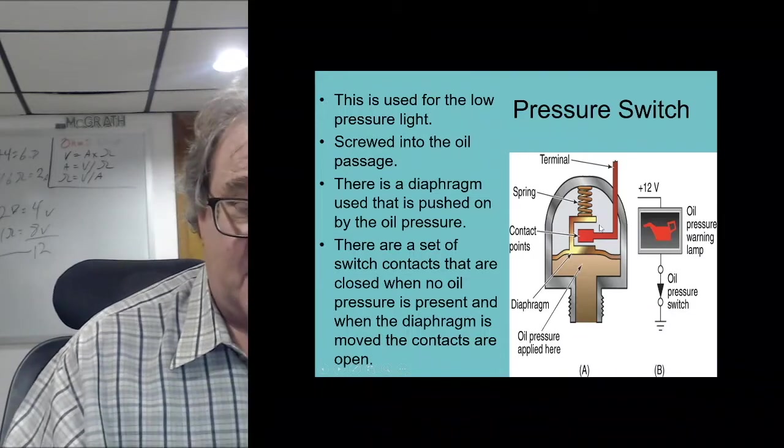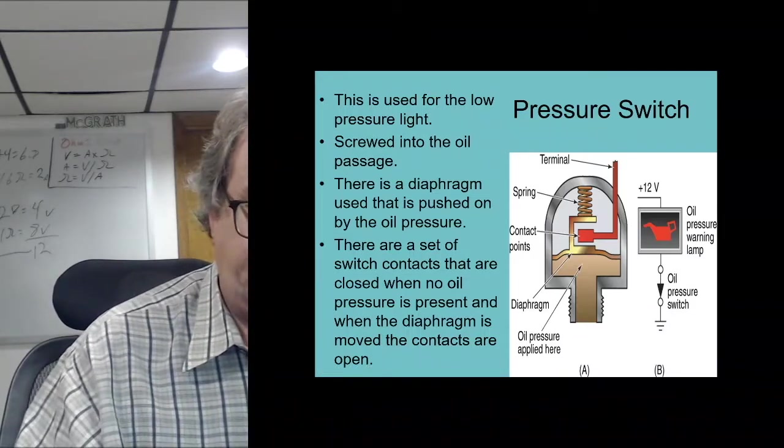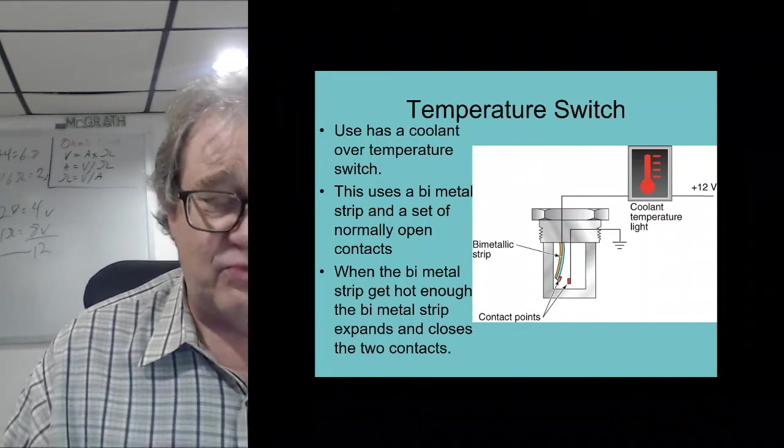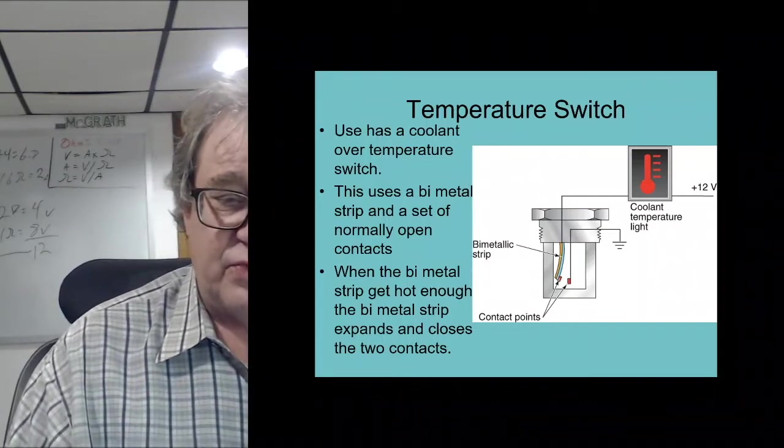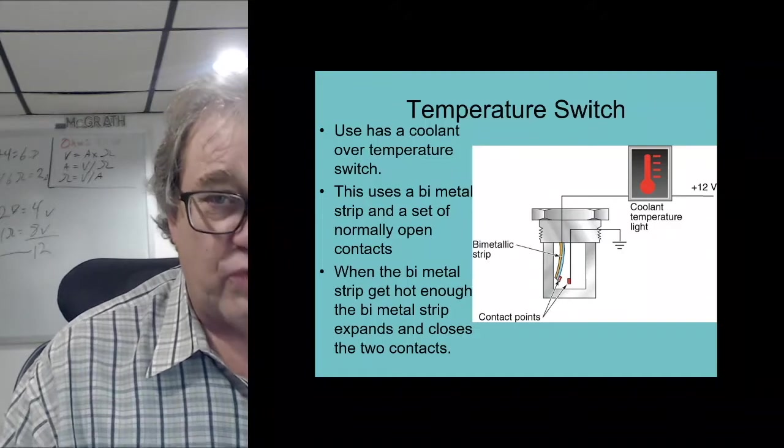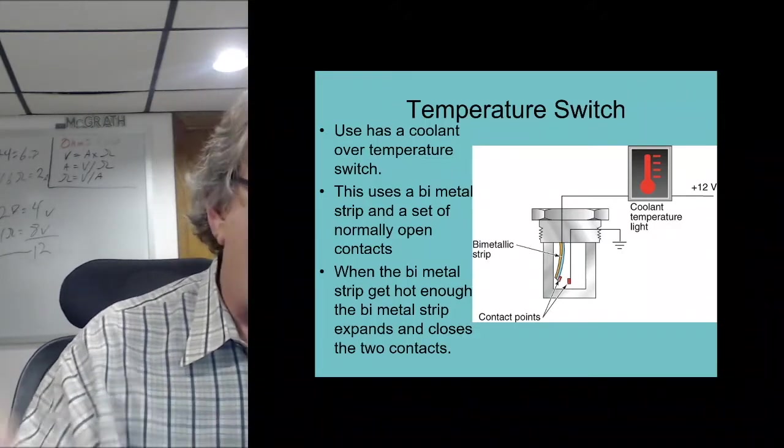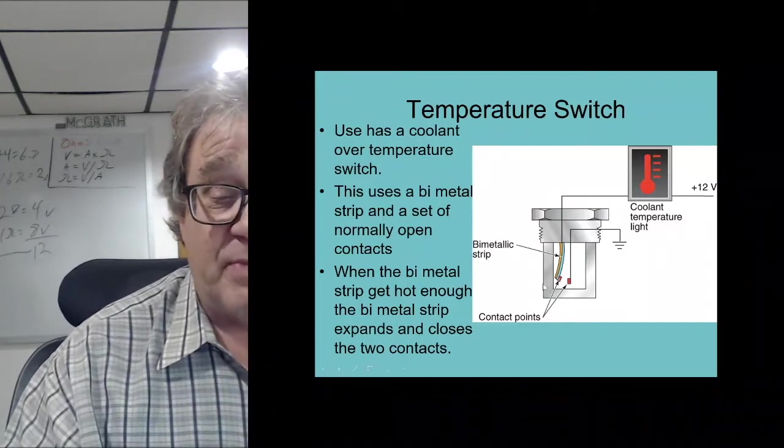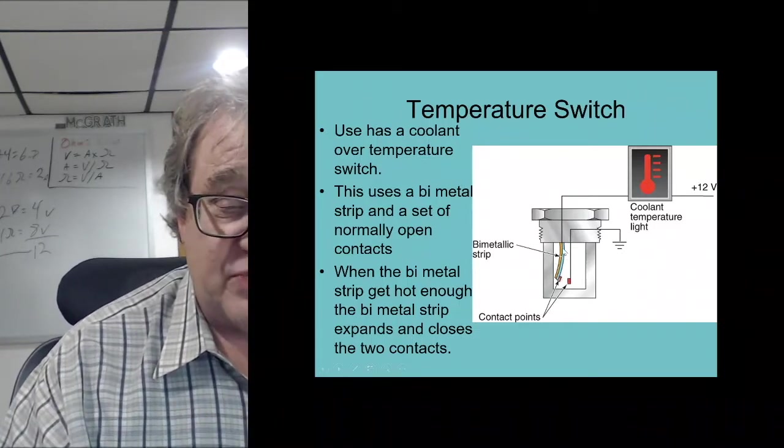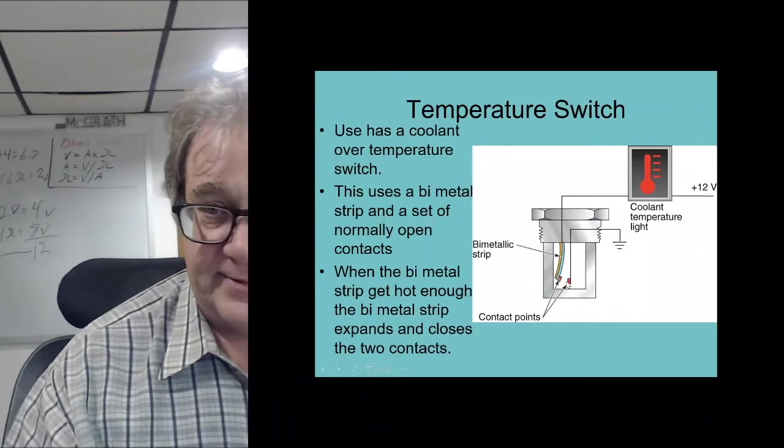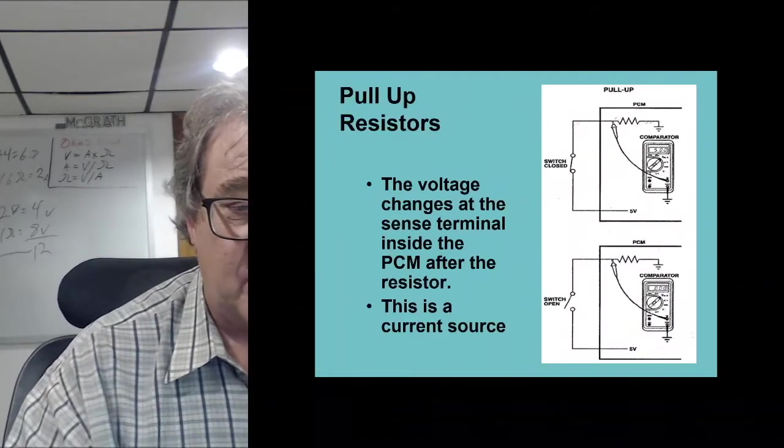Here's the temperature switch. They don't really use these anymore. This was really used to turn on an overheating light and they also used them for fan control, electric fan control a million years ago. We're back to the bi-metallic strip. When this guy heats up it bends, makes contact, turns on the light. Pretty simple.